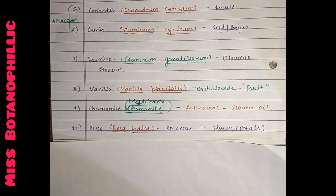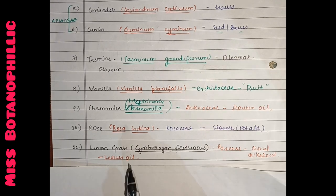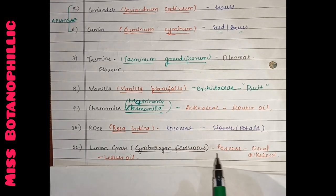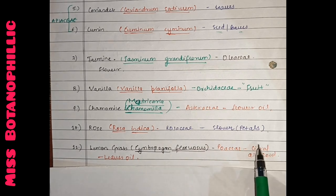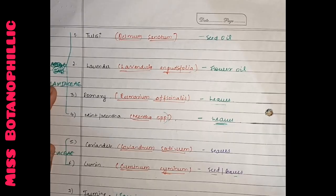Now we have another bonus plant. It's lemon grass - Cymbopogon flexuosus. It is from Poaceae family. Citral alkaloid is basically extracted from lemon grass leaves. This lemon grass is generally used as fodder, but is also used for its characteristic smell.